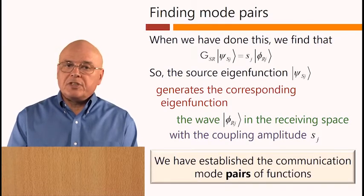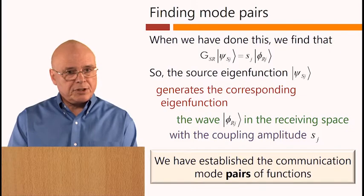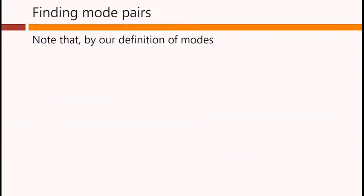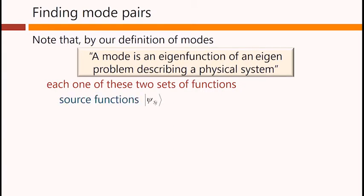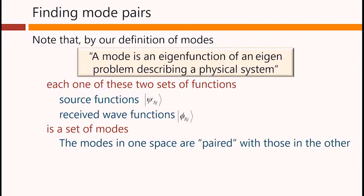Therefore, we have established the communication mode pairs of functions. Note that, by our definition of modes that we gave earlier on, each one of these two sets of functions, the source functions, Psi Sj, and the received wave functions, Phi rj, is a set of modes. The modes in one space are paired with those in the other.